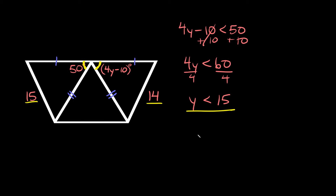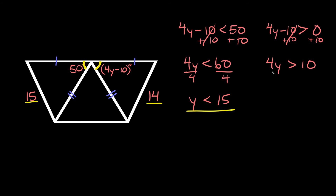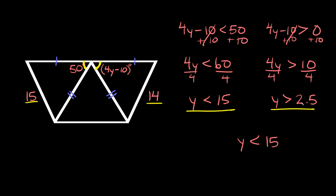Now to find the other solution, we take 4y minus 10 and say it's greater than 0, because whatever this angle is it has to be bigger than 0 degrees. Adding 10 to both sides gives 4y greater than 10. Dividing both sides by 4, y is greater than 2.5. Combining these into one inequality: y is greater than 2.5 and y is less than 15.